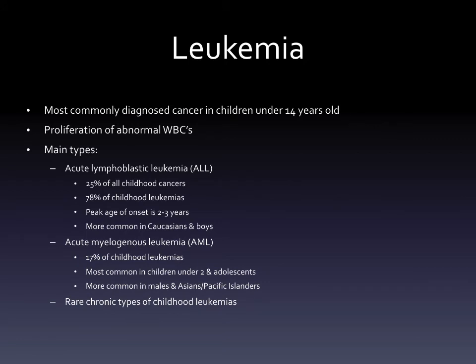Leukemia is the most commonly diagnosed cancer in children under 14. The main types are acute lymphoblastic leukemia (ALL) and acute myelogenous leukemia (AML), along with some rare chronic types. ALL accounts for about 25 percent of all childhood cancers and 78 percent of childhood leukemia - by far the most common - with a peak onset of two to three years and greater prevalence in Caucasians and boys. AML accounts for about 17 percent of childhood leukemias, most commonly seen in children under two and teenagers, and is more common in males, Asians, and Pacific Islanders.